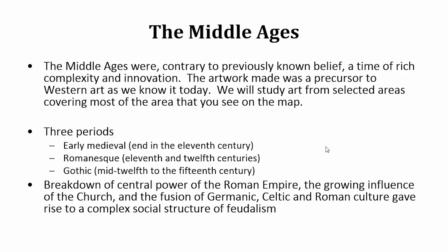The artwork made here was a precursor to Western art as we know it today. We're going to see a cauldron of influences with all sorts of things being poured into it. There are three periods: the early medieval, which ends in the 11th century; the Romanesque period, mostly the 11th and 12th centuries; and Gothic, which is the mid-12th to 15th century. During this time there's a breakdown of the central power of the Roman Empire, a growing influence of the church, and a fusion of Germanic, Celtic, and Roman culture. A very complex social structure arises out of it, and that structure is called feudalism.